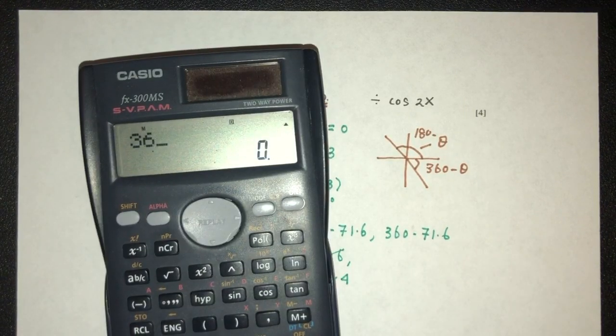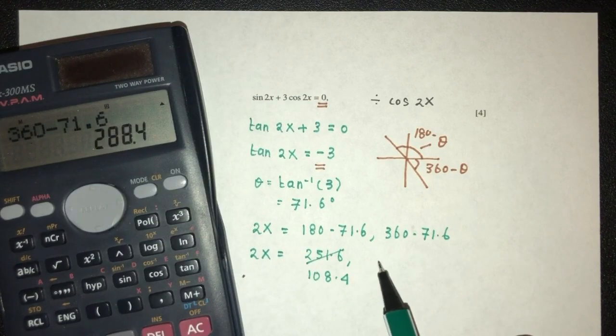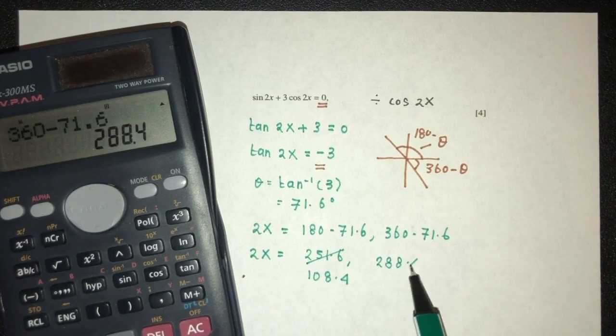So this one will be 360 minus 71.6. That should be 288.4 degrees.